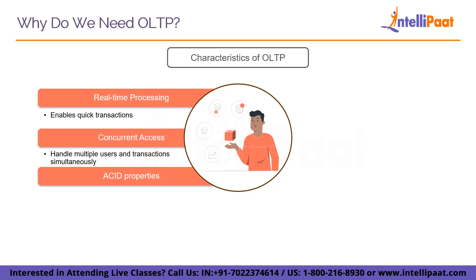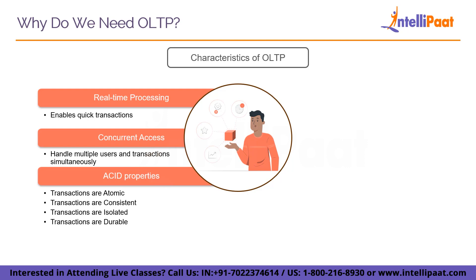To ensure data integrity and reliability, OLTP systems adhere to the ACID properties. ACID stands for Atomicity, Consistency, Isolation, and Durability. Transactions are atomic — they either finish totally or not at all. They are consistent, meaning the database remains consistent before and after the transaction. They are isolated, meaning transactions do not interact with one another. And they are durable, meaning that once a transaction is committed, its consequences are permanent even if a system failure occurs.